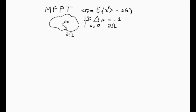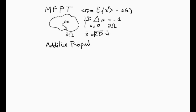This is associated with the stochastic equation ẋ = √(2d) ẇ, and the particle is absorbed at the boundary of the domain. What we are going to look at today is the additive property of the mean first passage time.